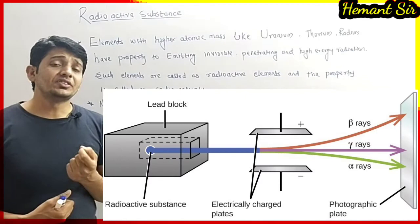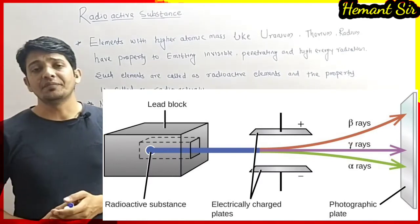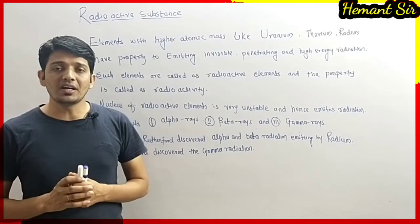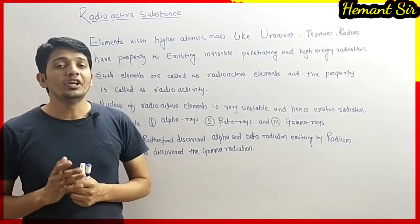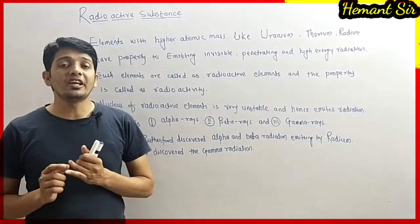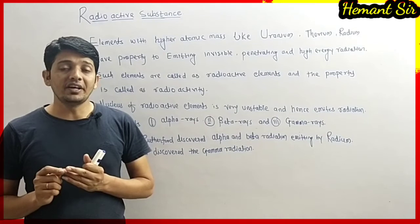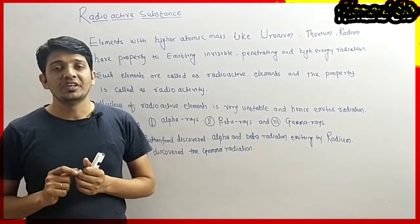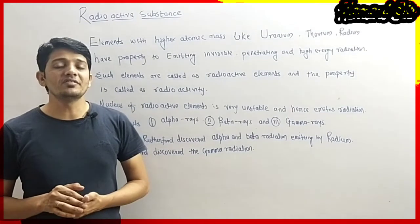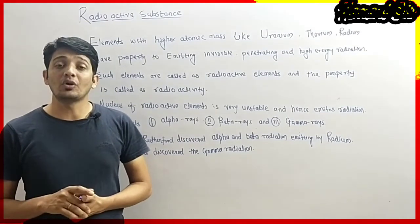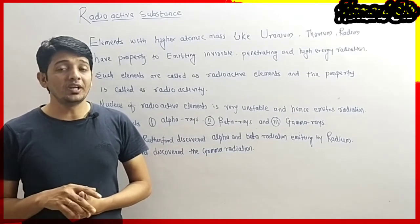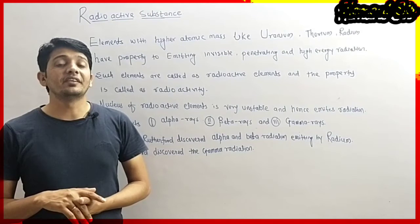What is a radioactive substance basically? Those substances or elements having higher atomic mass have the capacity to emit different radiations. These radiations are invisible, highly penetrating, and with high energy. Such radiations are emitted continuously from some elements, and such elements are called radioactive elements. Examples include Uranium, Thorium, and Radium.